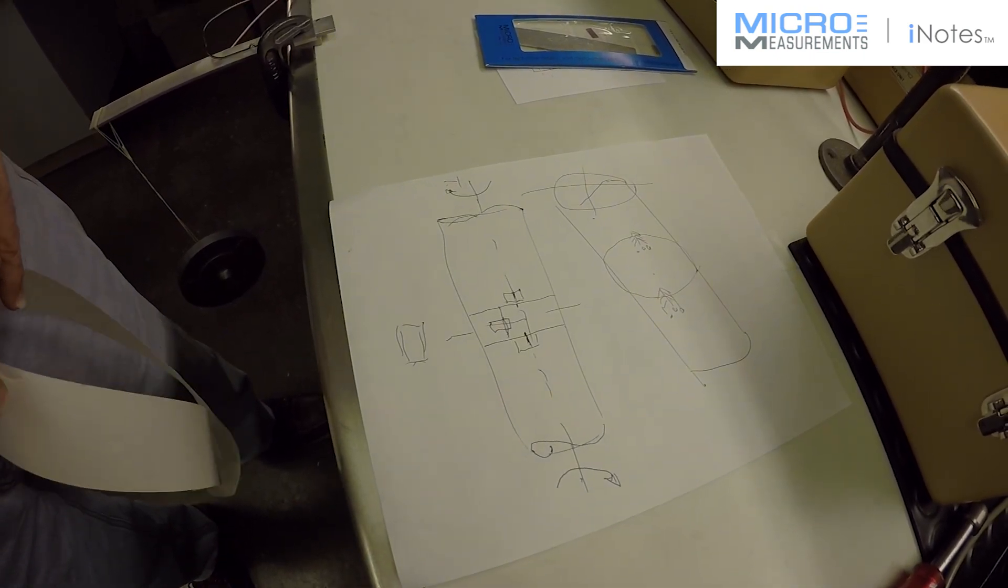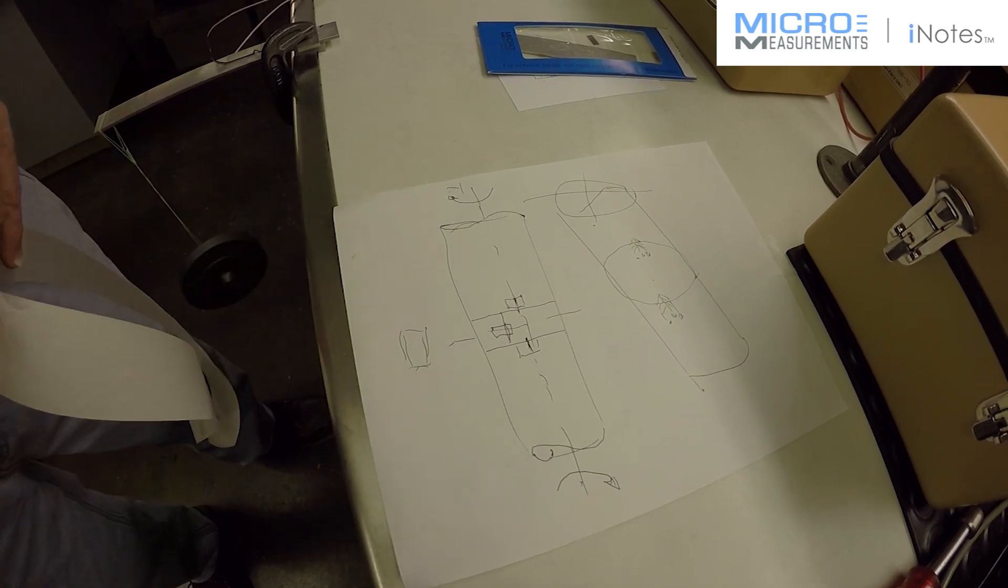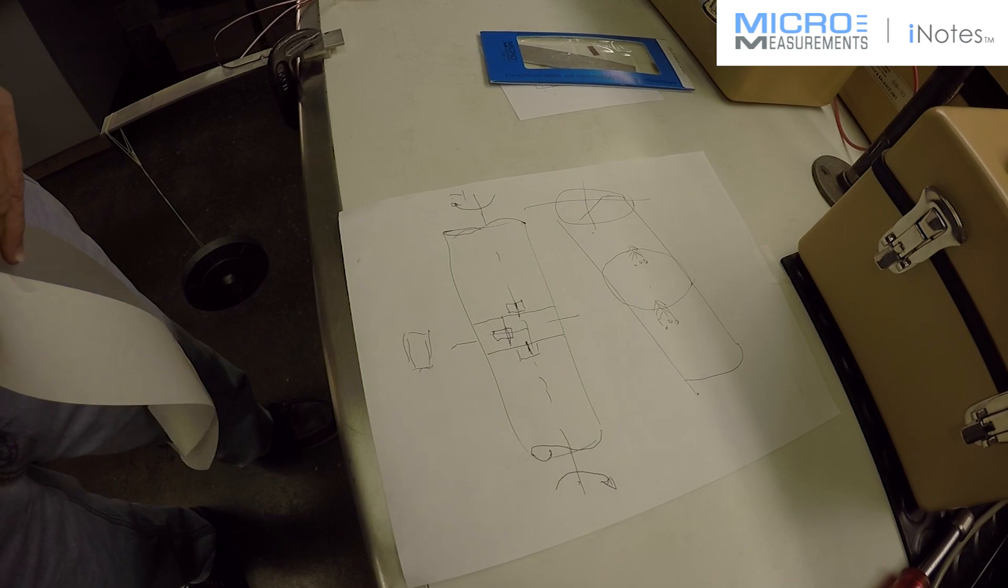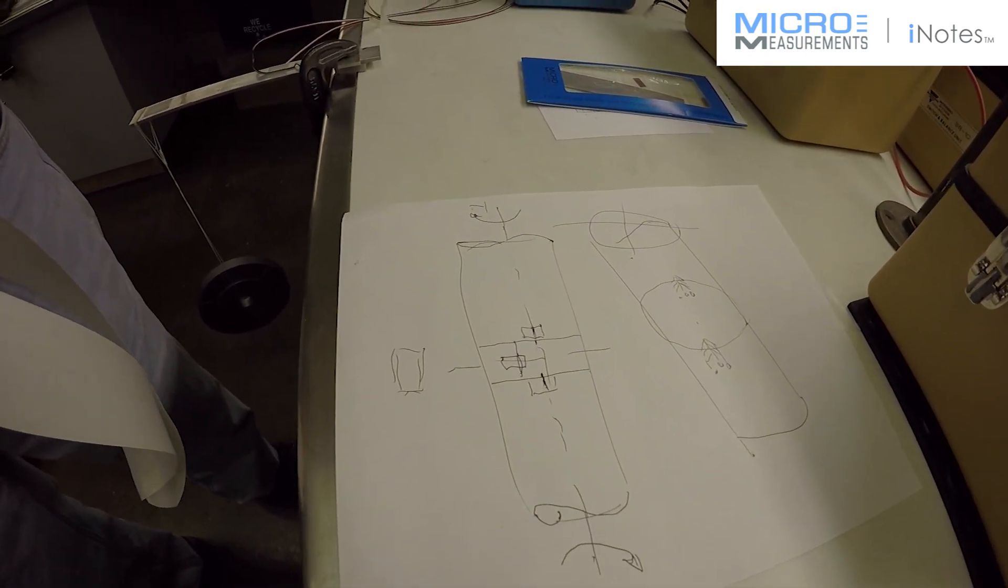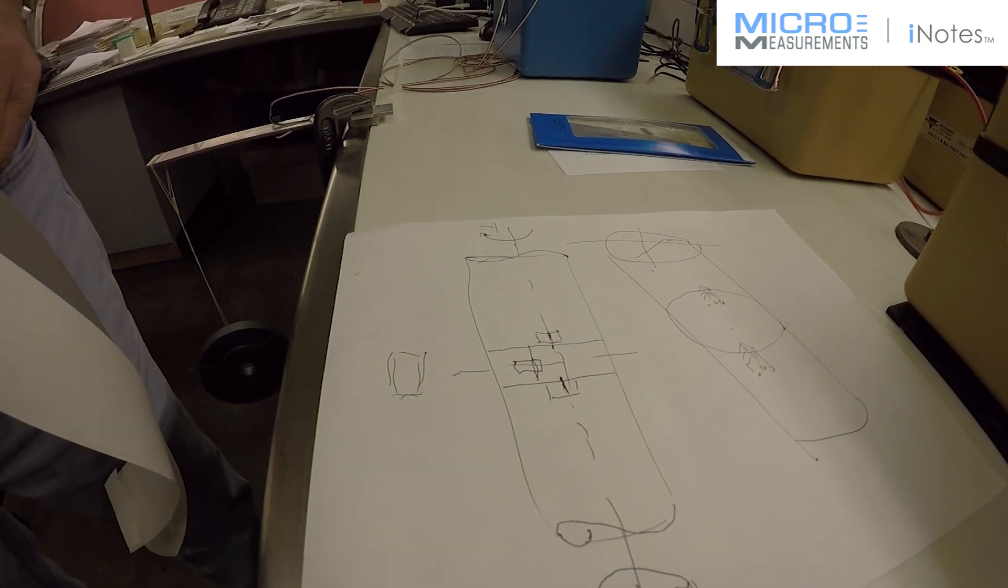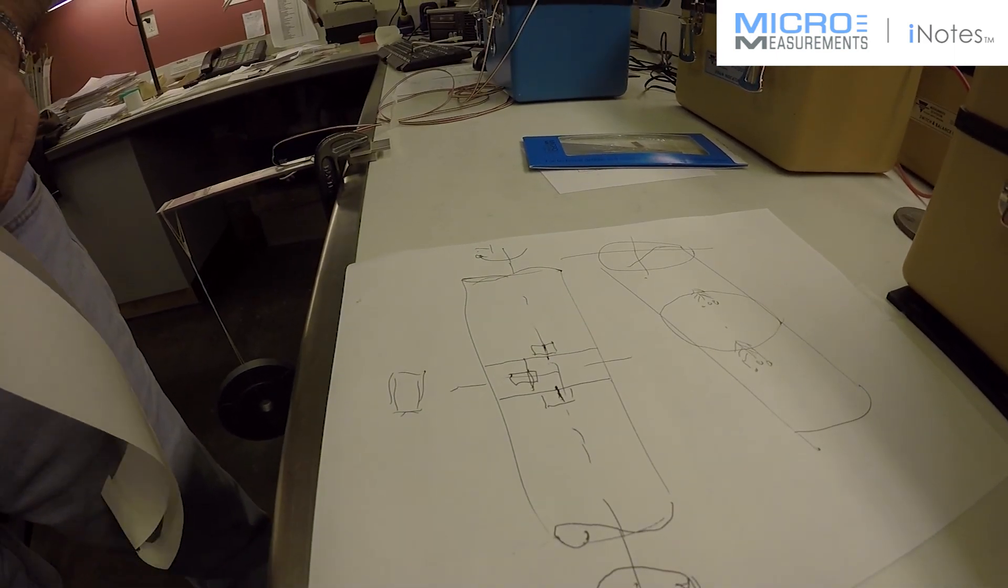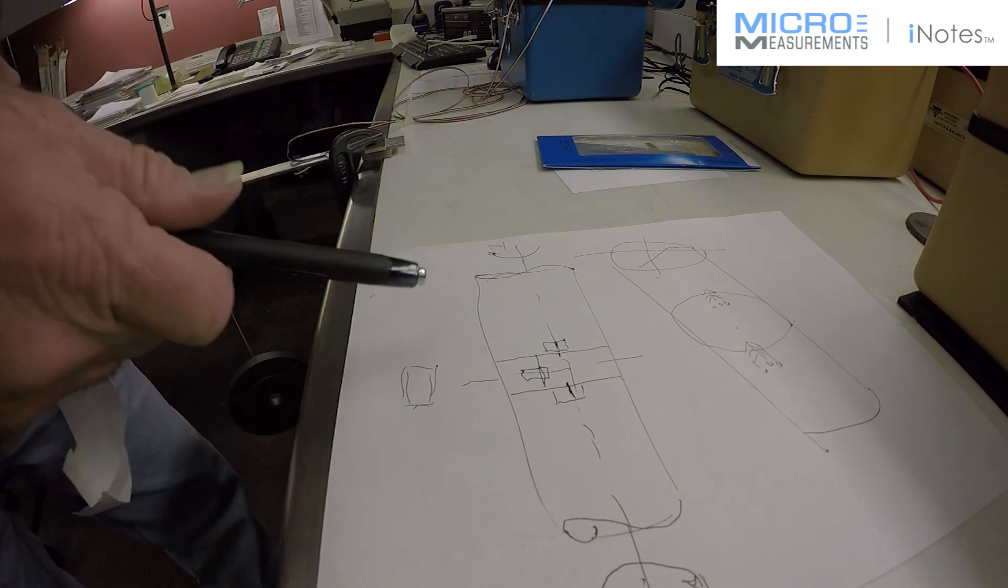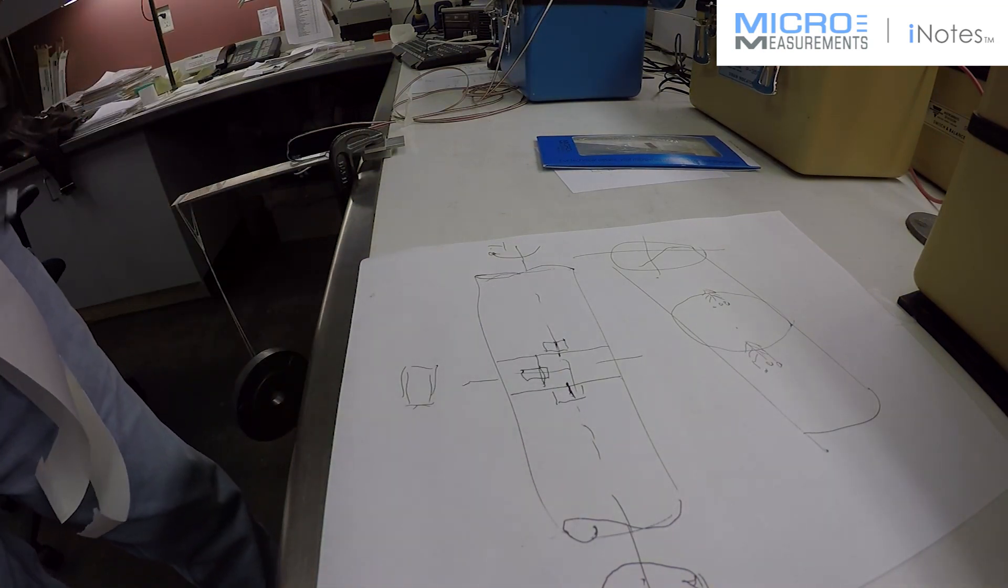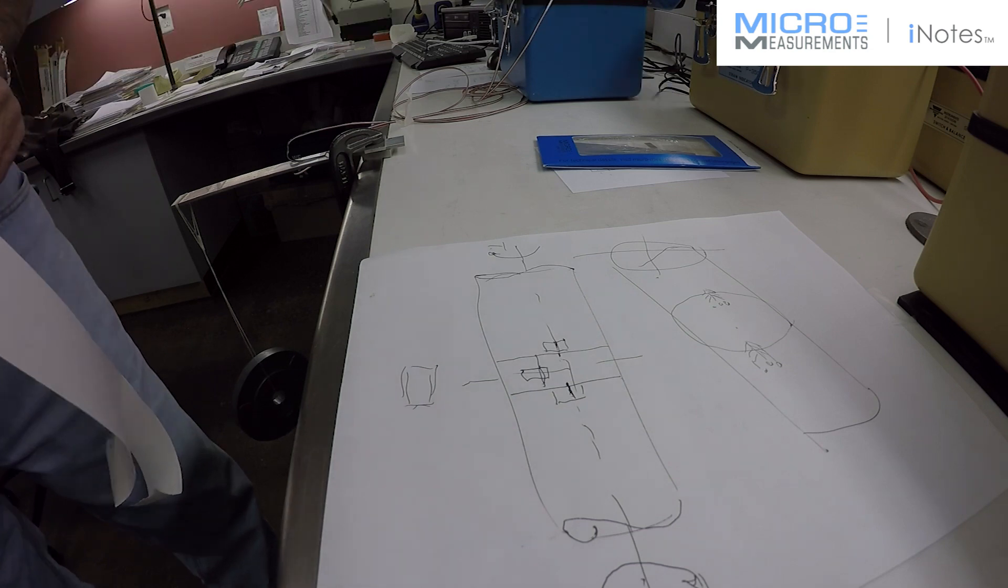surface, relatively smooth. Then you finish off with the conditioner and the neutralizer using your 320 and 400 grit carbide paper. This is just a technique to ensure that the alignment lines of the axis of the shaft correspond to where you're going to put the strain gauges.